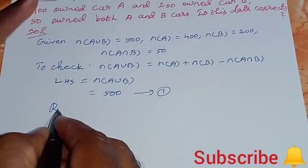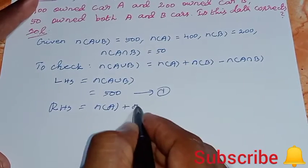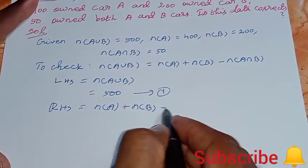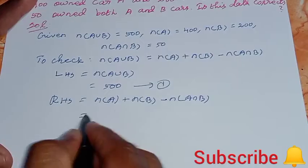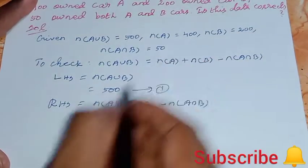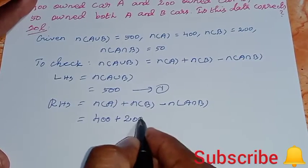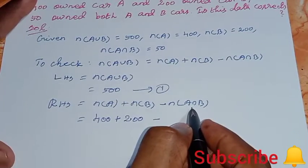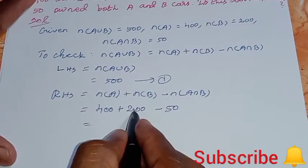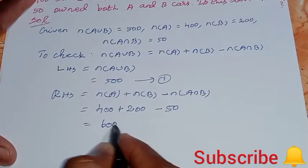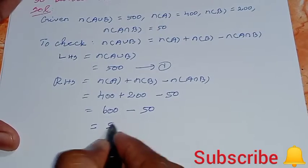Now right hand side, what value? Right hand side equal to n of A plus n of B minus n of A intersection B. So, equal to 400 plus 200, 600 minus 50. So this is 550. This is the second answer.